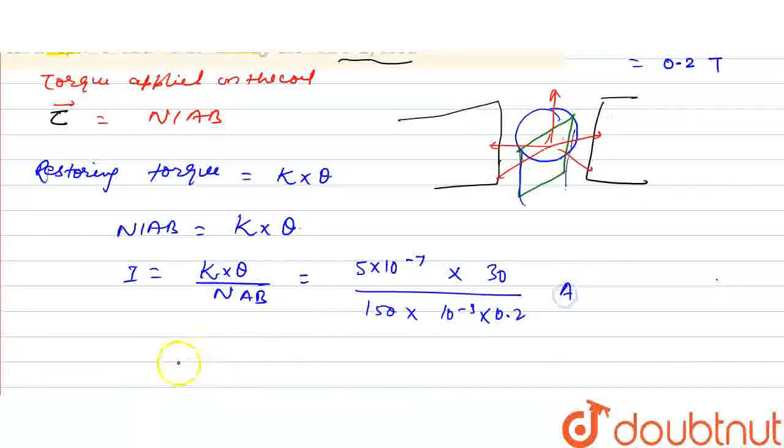When we solve, the value is 5×10^-4 ampere, and this is our answer to this question.